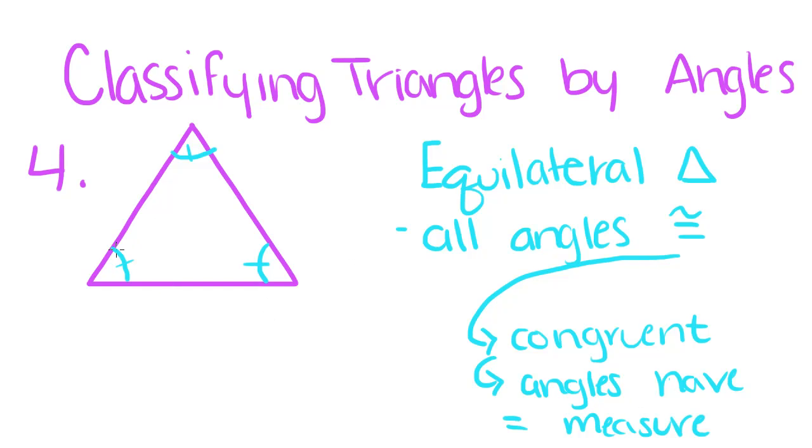So, we can mark them as congruent by doing this. So, these little tick marks indicate that these angles are congruent.